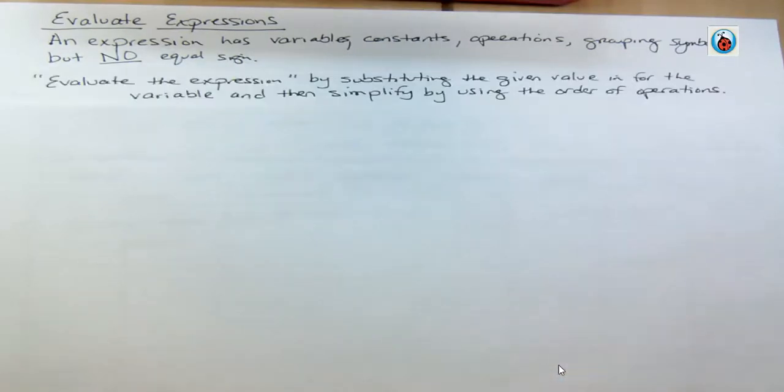When it says to evaluate the expression, we do that by substituting the given value in for the variable and then simplify by using the order of operations. That's what we mean by evaluate.